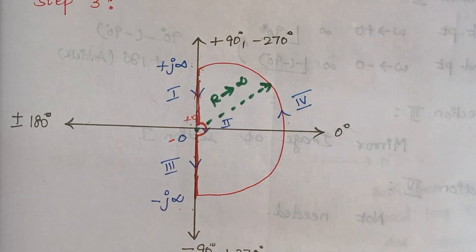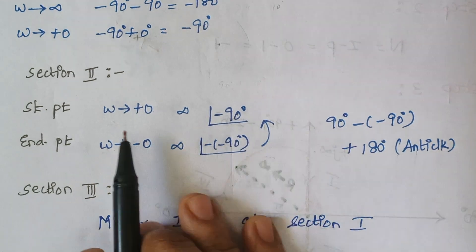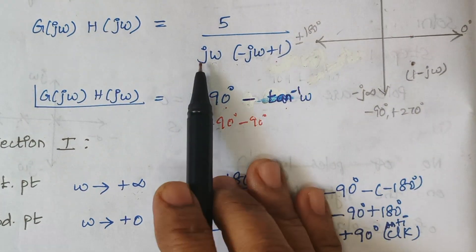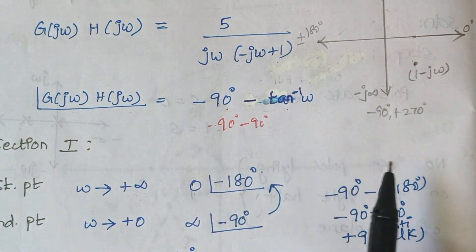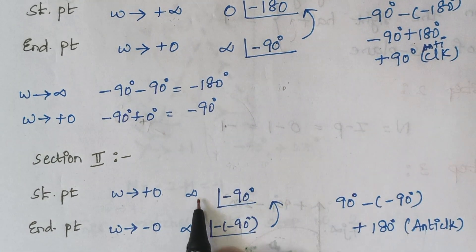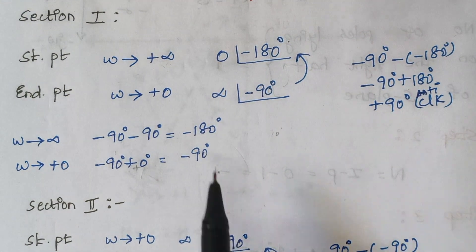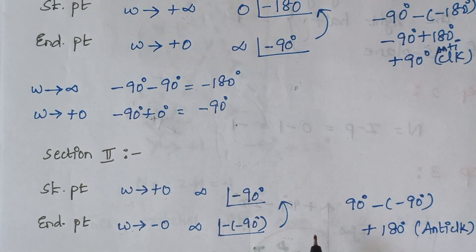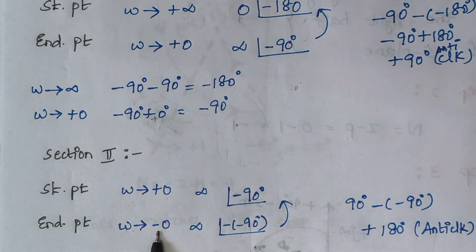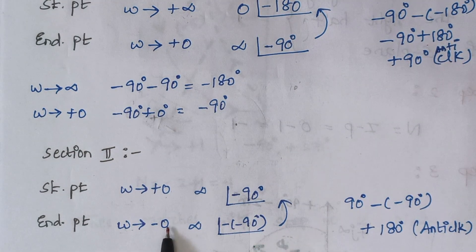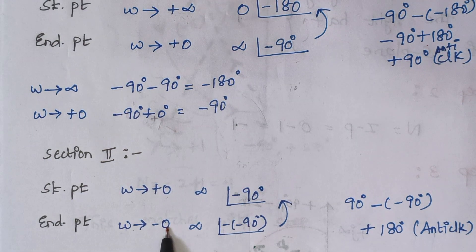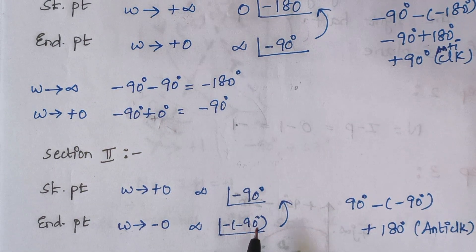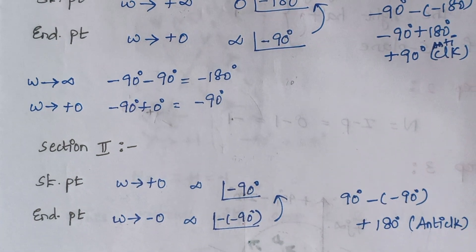Section 2 starts at plus 0 and ends at minus 0. For both values, the magnitude is infinity. When omega is plus 0, the phase is minus 90 degrees. When omega is minus 0 (after crossing the origin), we include an additional minus sign, so minus of minus 90 = plus 90. The total rotation is 90 plus 90, giving 180 degrees anticlockwise.